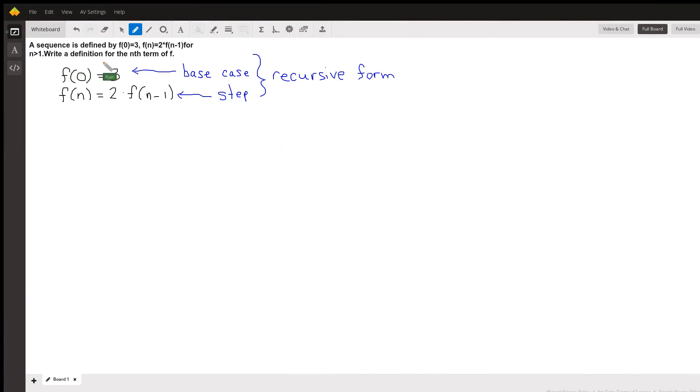Alright, so in this problem we're given the recursive form of a sequence. That is, we're given the base case which is the start of the sequence, so the zeroth term f(0) is equal to 3, and we're given the step which tells us how to go from a prior term f(n-1).